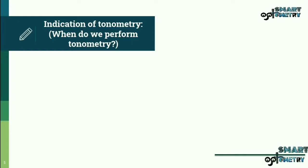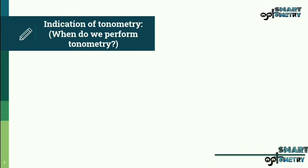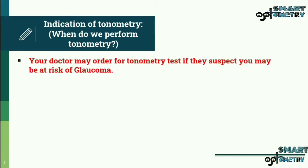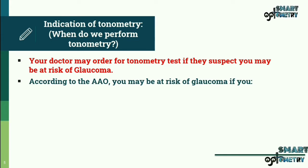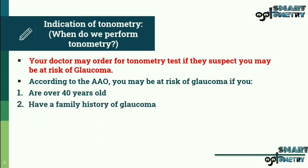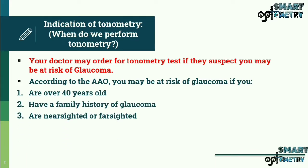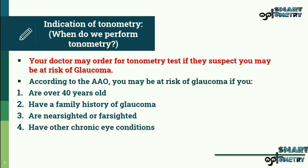Now let us discuss the indications of tonometry — when do we perform it? Your doctor may order a tonometry test if they suspect you may be at risk of glaucoma. According to the American Academy of Ophthalmology, you may be at risk of glaucoma if you are over 40 years of age, have a family history of glaucoma, or are nearsighted or farsighted.